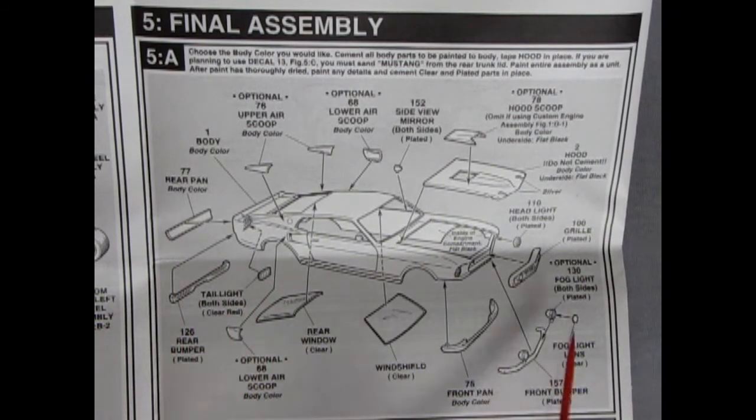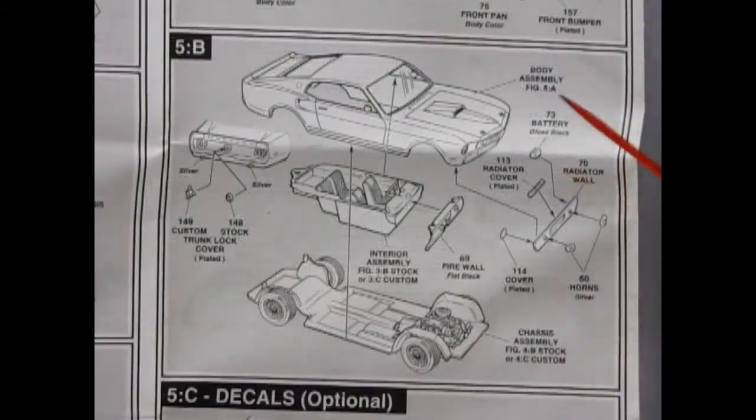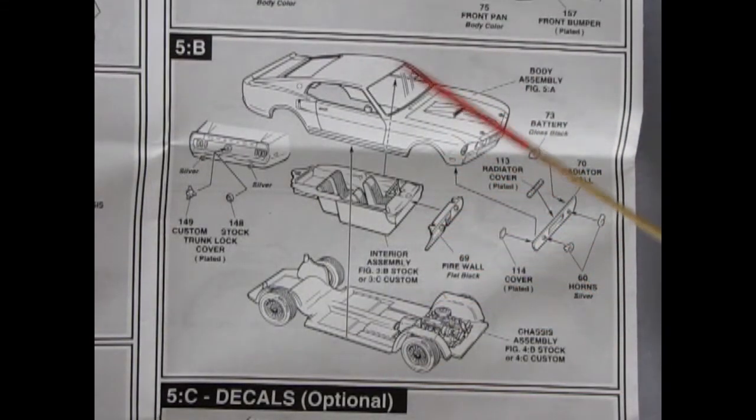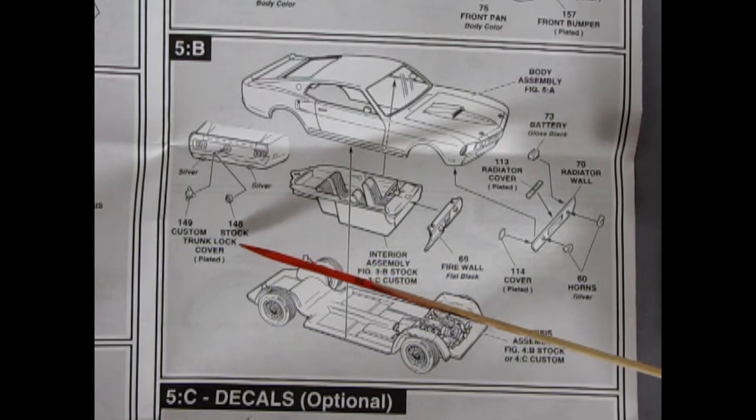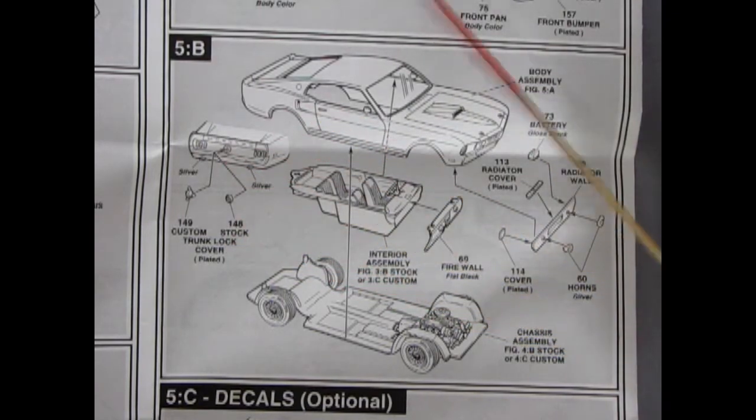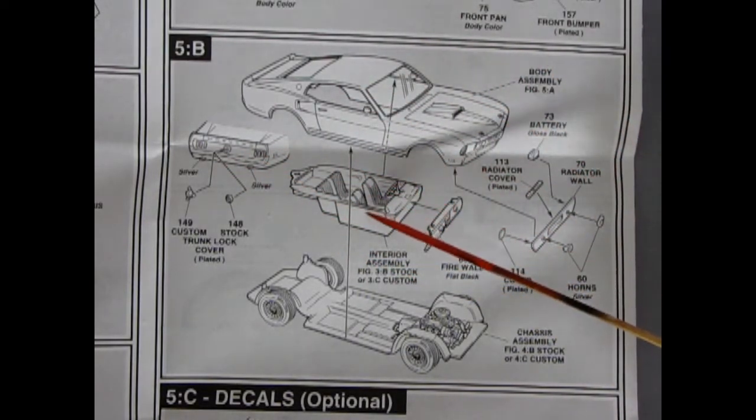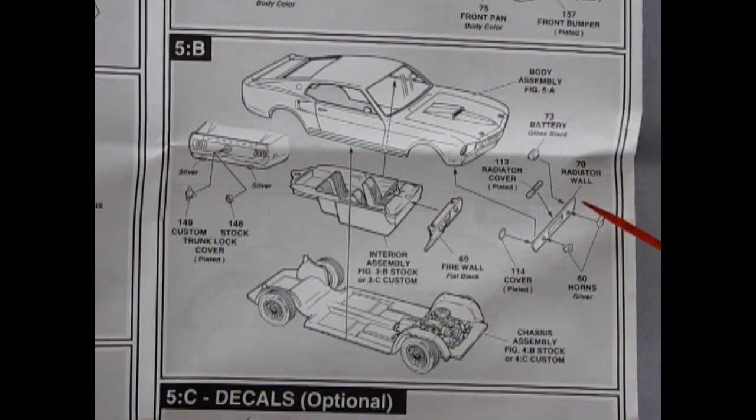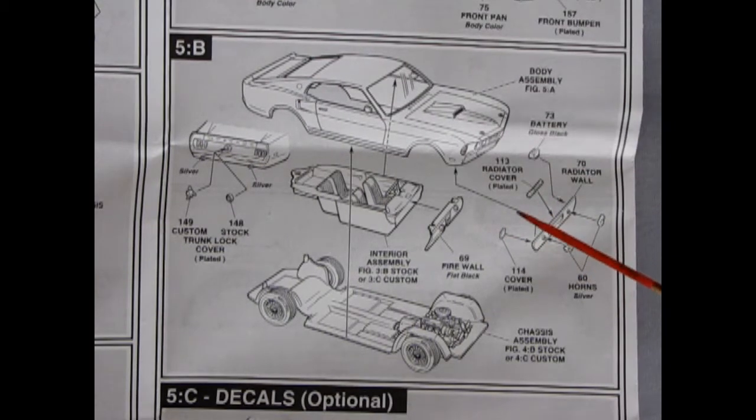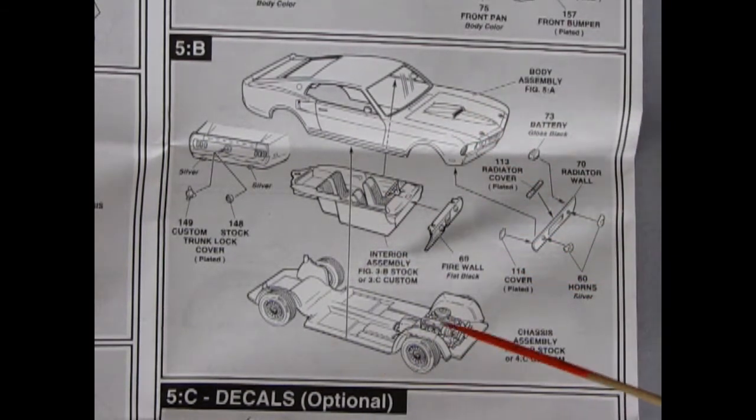Now 5B is the fun part where all the components go together. And here we have a, you get a choice of custom or stock. That's a trunk lock cover, would glue onto there. The custom looks like a star, the stock one just looks like a round medallion. There's our body all assembled, going onto the interior. The firewall will glue in here, or glues on the end there, pops in. And then you've got your radiator wall with radiator molded in, the horns are going on one side, radiator cover going on there, that's plated. The battery, gloss black, and then there's another cover which glues into here. And all of this stuff pops right on your assembled chassis.